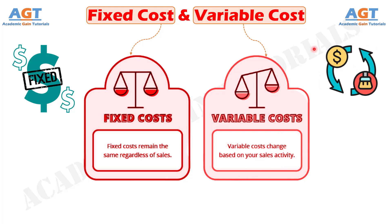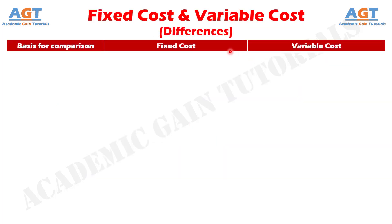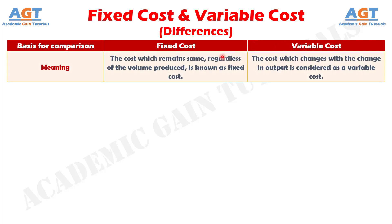So, let's look into the basic differences between fixed cost and variable cost in a tabular form. Difference number one: fixed cost is the cost which does not vary with the changes in the quantity of production units, whereas variable cost is the cost which varies with the changes in the number of production units.